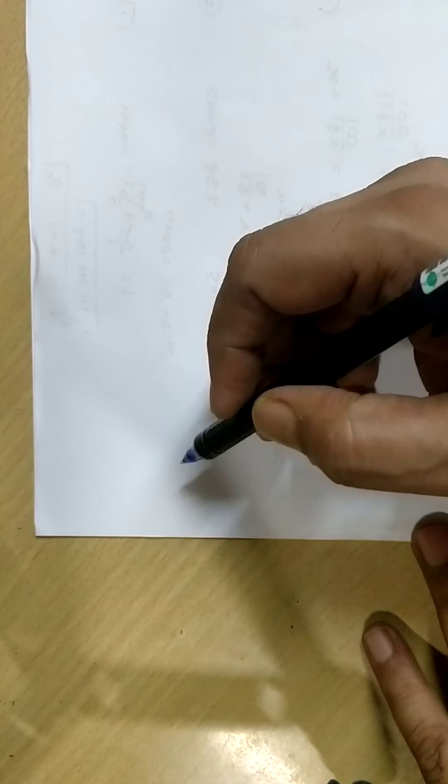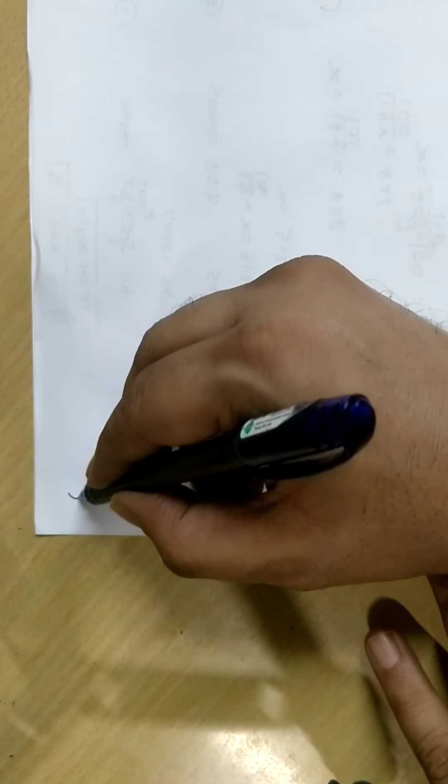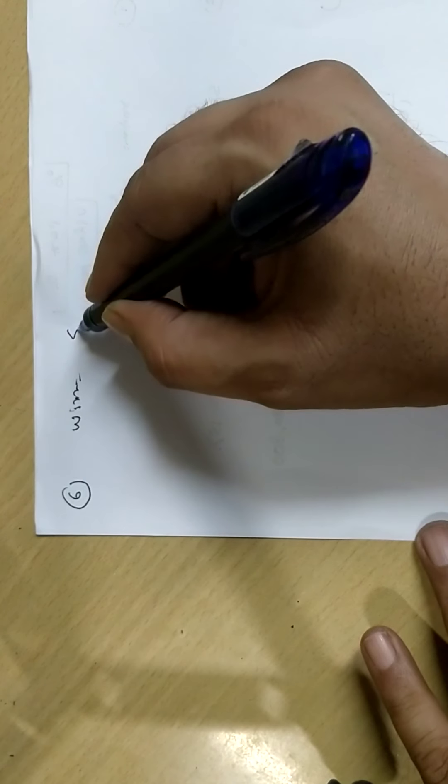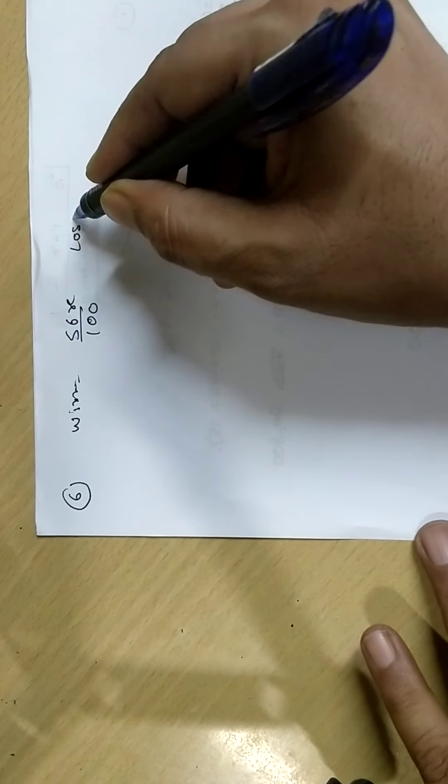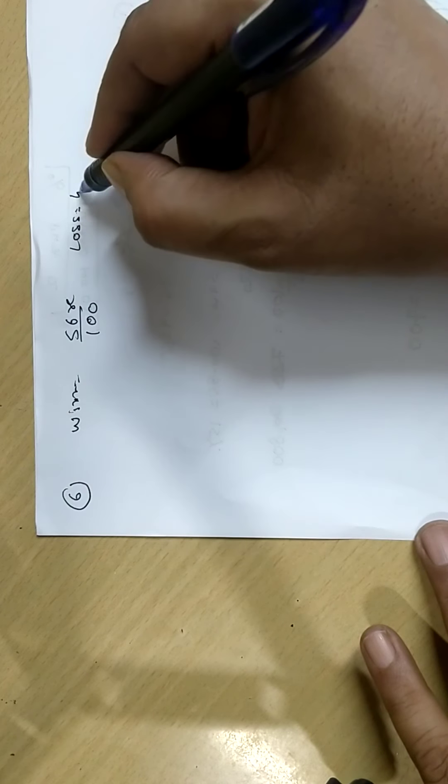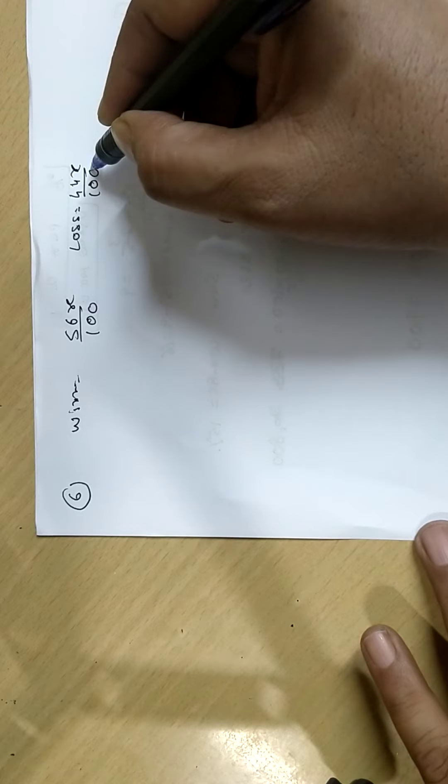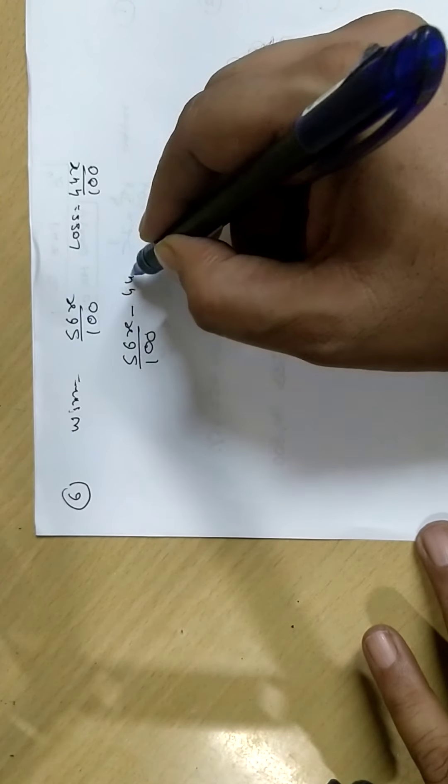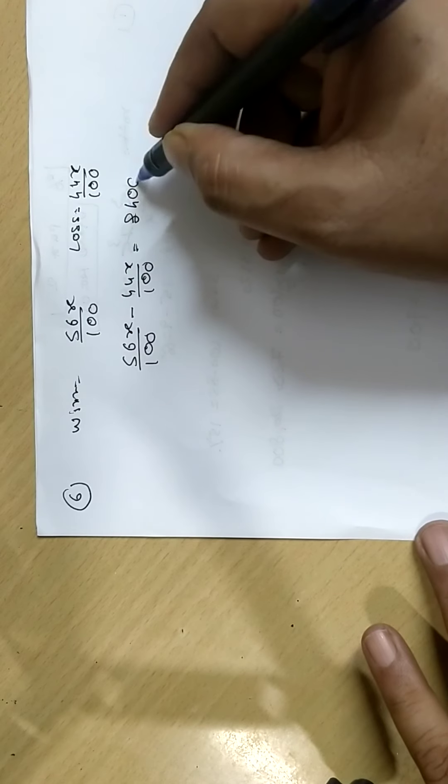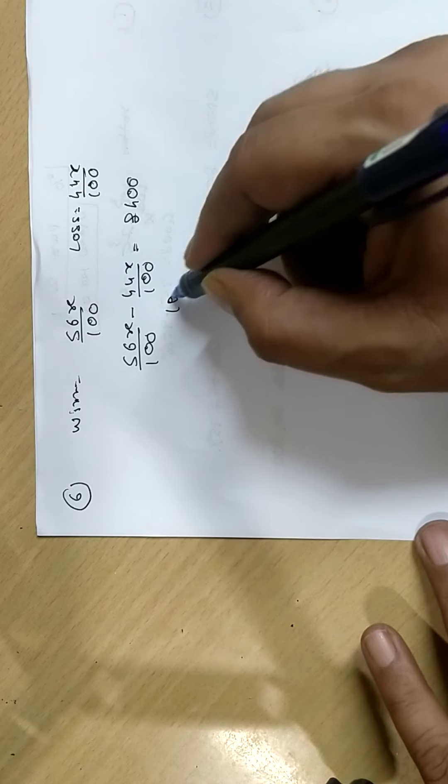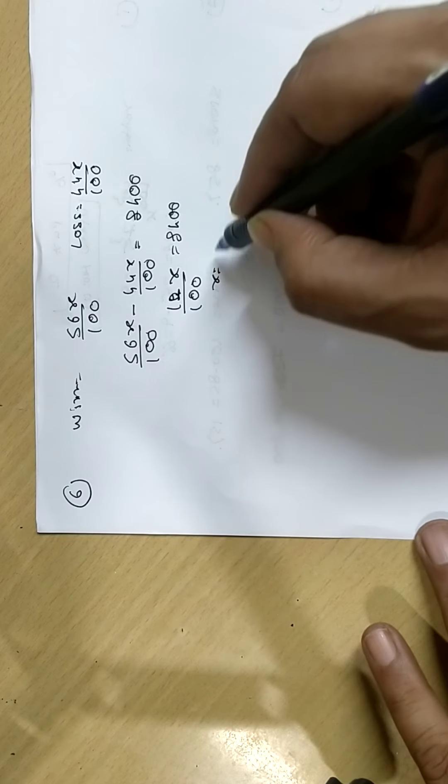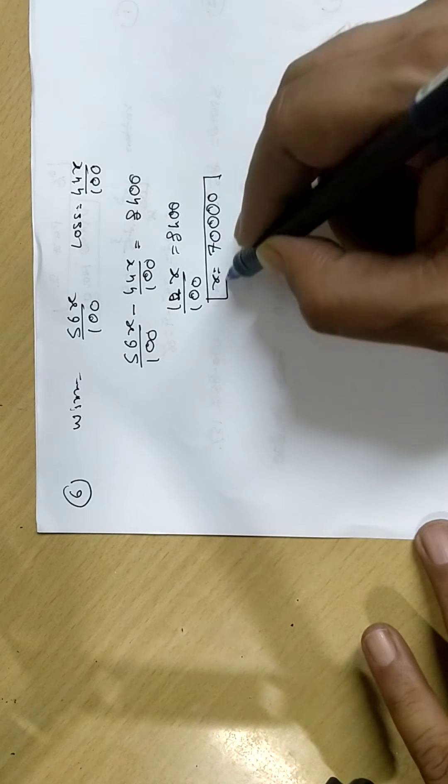In election, there were two candidates. Number 6. Winner got 56% of total vote. The loser will get 100 minus 56, means 44%. And the margin between winner and loser is 8,400. 56X upon 100 minus 44X upon 100 equals 8,400. 12X upon 100 equals 8,400. X equals 70,000 is the answer.